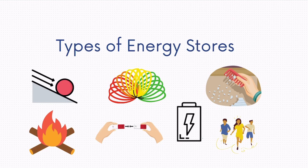We're going to take a look at stores — the pictures in front of us now. Very simply, an energy store is a way energy can be kept in a system. The seven stores are all ways that energy can be kept.